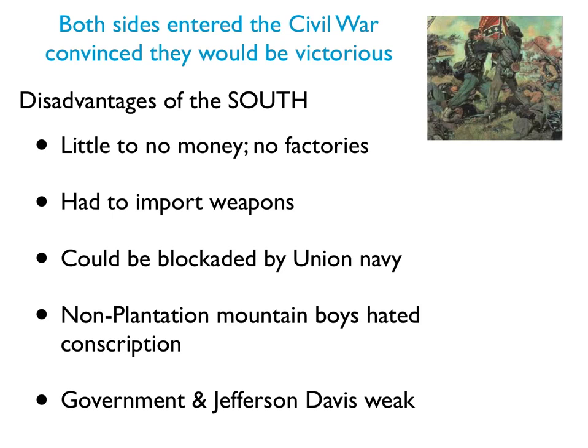The South's disadvantages: little or no money, and only two or three factories in the South. It had to import its weapons — without factories, you don't have arsenals to make weapons, so all weapons Confederate soldiers used had to come in from Europe. But the South could be blockaded by the Union Navy, making it very difficult for ships to get in and bring anything, whether weapons or anything else.